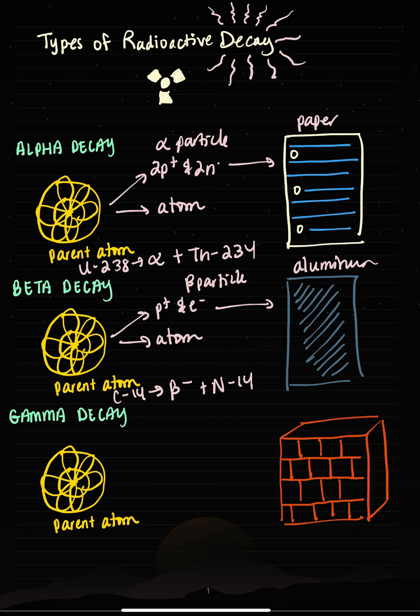So gamma decay doesn't create any new elements or atoms. It just gives off pure energy. So this is my gamma particle, which is photons of energy, so it's super dangerous and we need thick concrete walls to stop gamma particles.